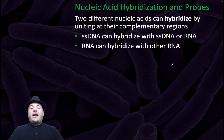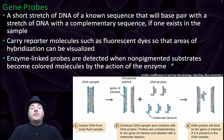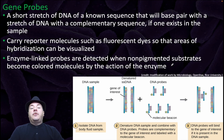Two different nucleic acids can hybridize by uniting at their complementary regions. Single-stranded DNA can hybridize with ssDNA or RNA. RNA can hybridize with other RNA. This can be used for gene probes, which are short stretches of DNA of a known sequence that will base pair with a stretch of DNA with a complementary sequence if one exists in the sample. The probes carry reporter molecules such as fluorescent dyes so the areas of hybridization can be visualized. Enzyme-linked probes are detected when non-pigmented substrates become colored molecules by the action of the enzyme.